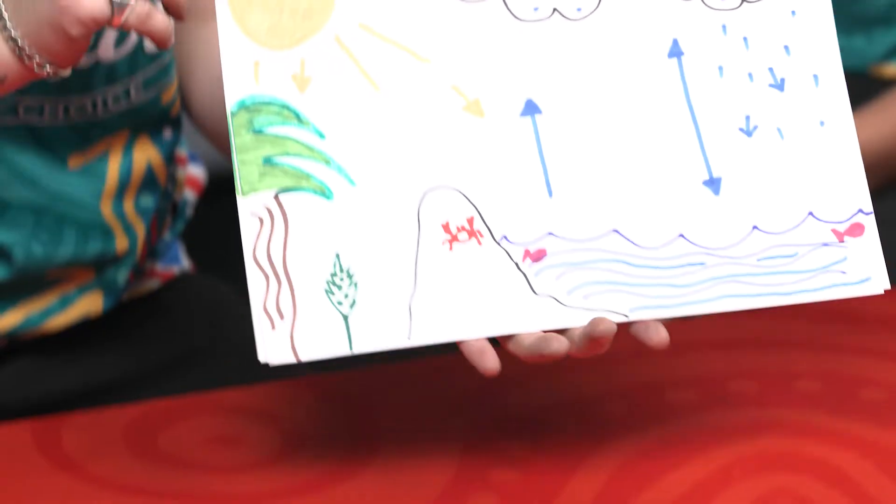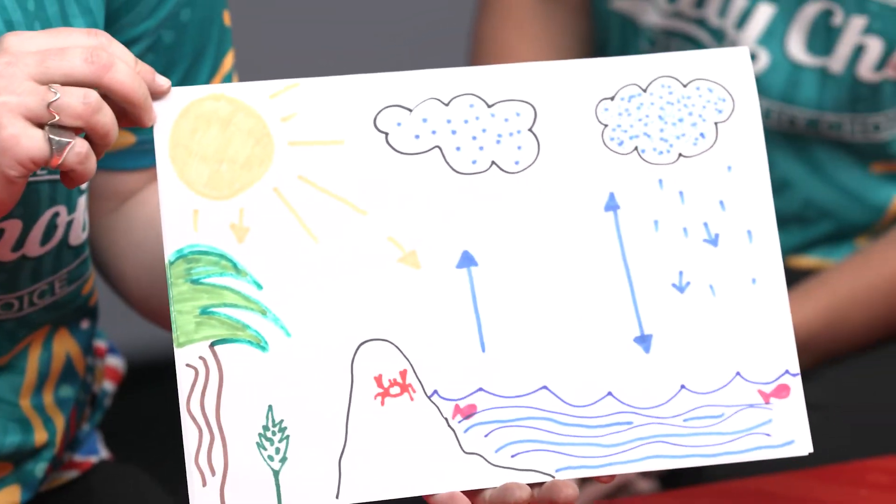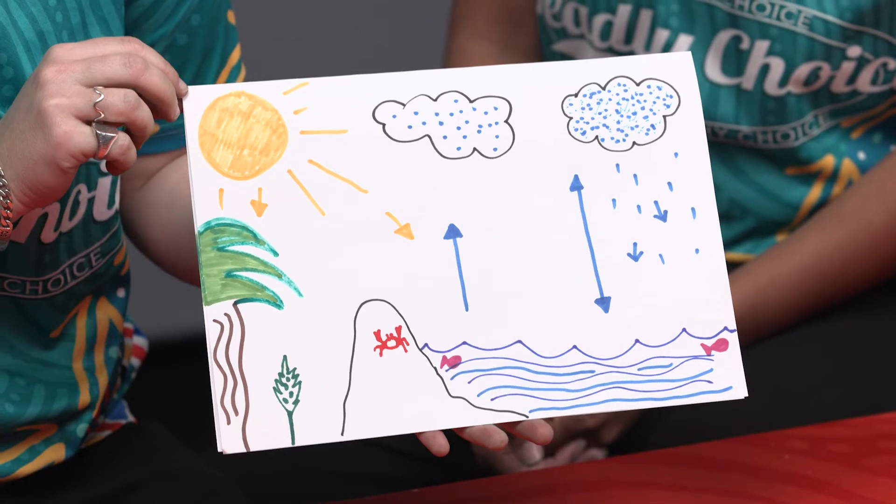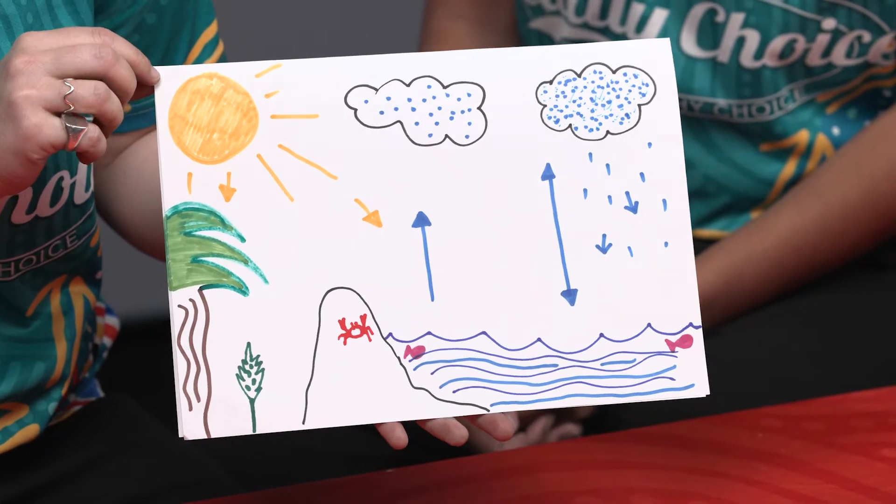Shout out to everyone from Deadly Kindies and thanks for watching. We're going to be having a yarn about rain and how rain forms and what that looks like. We've come together and drew a pretty deadly picture. So we can show everybody here — this is our little explanation about how rain works.